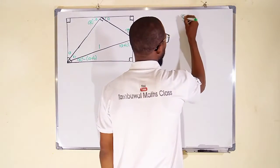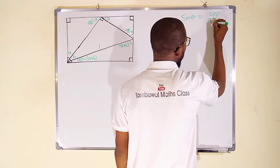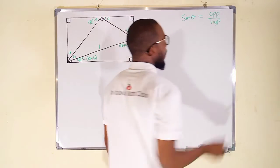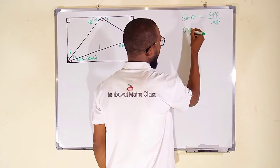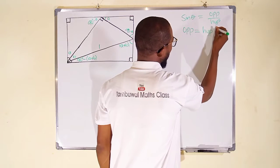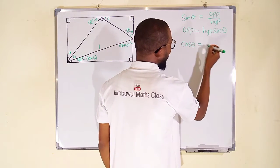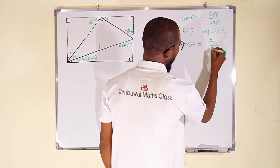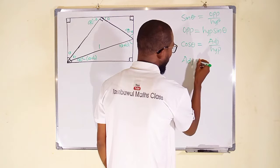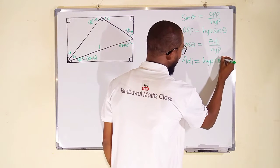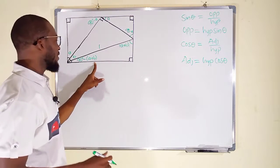Remember, the sine of an angle is equal to opposite divided by hypotenuse. If you are looking for the opposite, you can multiply sine theta by the hypotenuse, so opposite equals hypotenuse multiplied by sine of that angle. For cosine of that angle, adjacent divided by hypotenuse means adjacent equals hypotenuse multiplied by cosine of that angle.